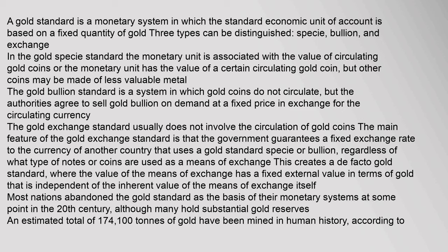In the gold bullion standard, gold coins do not circulate, but authorities agree to sell gold bullion on demand at a fixed price in exchange for circulating currency. The gold exchange standard usually does not involve gold coin circulation; the government guarantees a fixed exchange rate to another country using a gold standard, creating a de facto gold standard where the means of exchange has a fixed external value in terms of gold.